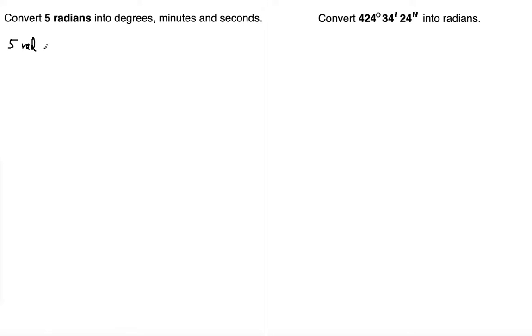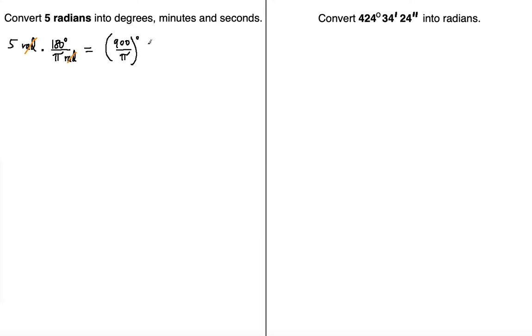The first thing I'm going to do is take five radians and multiply it by the conversion factor: 180 degrees per pi radians. The radian unit will be canceled out, and as a result, what we'll have is 900 over pi degrees, because degrees is the new conversion unit.